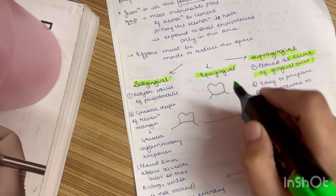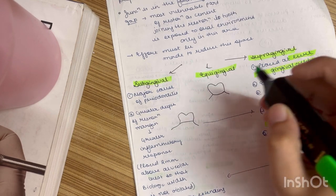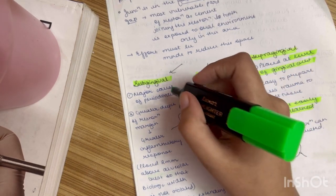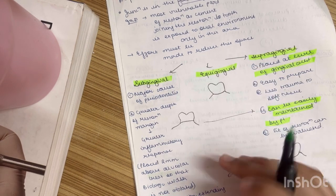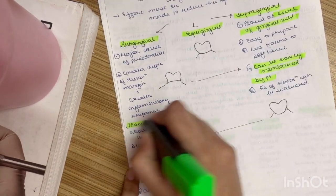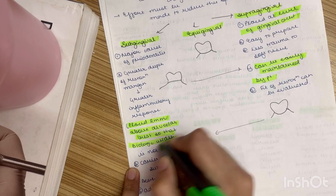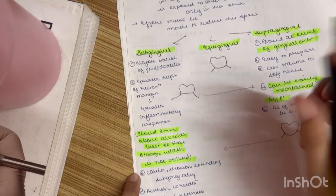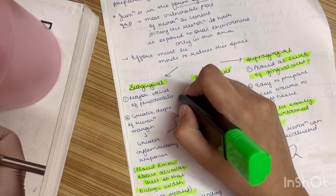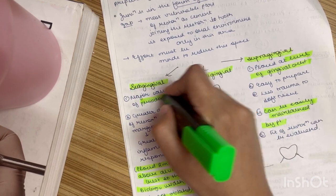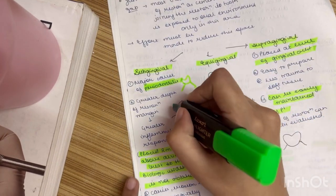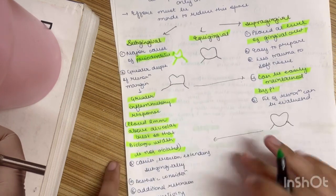Now equigingival is equal to the gingival crest. Now subgingival. Subgingival, what we see is that it is placed 2 mm above the alveolar crest so that the biological width is not violated. Now if you are placing it downward so what will happen is there will be more chance of the periodontitis. And there will be more inflammatory response.